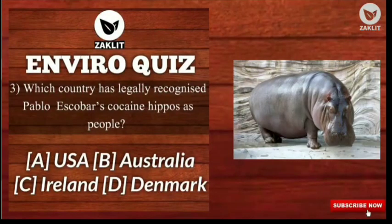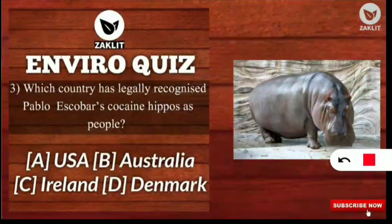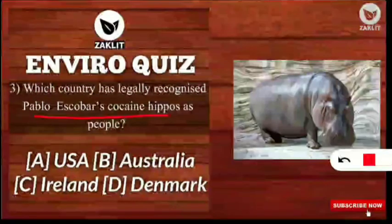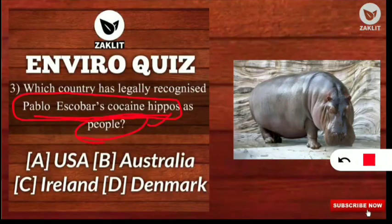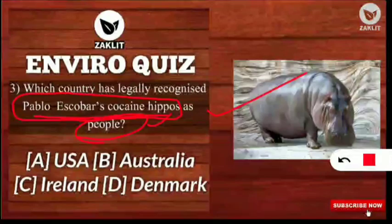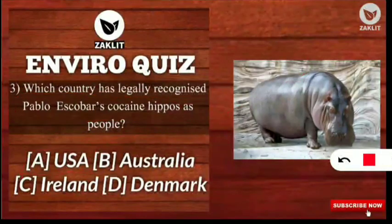The next question features a beautiful animal. Which country has legally recognized Pablo Escobar's Cocaine Hippos as people? Yes, they are considering these hippos as people. The correct answer is option A — USA, that is the United States of America.